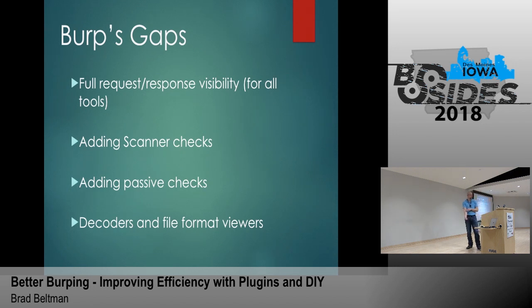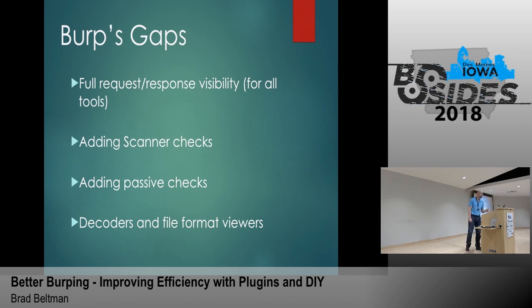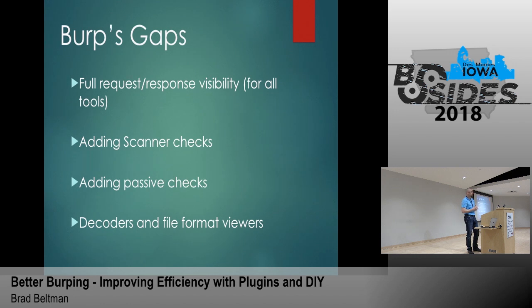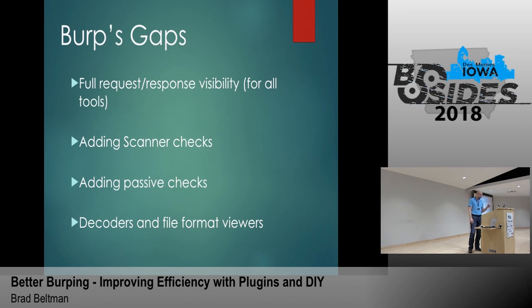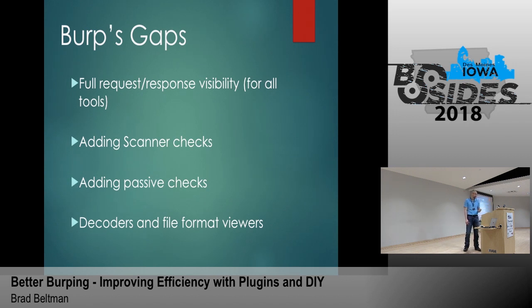One of the big gaps is having full visibility into all requests and responses across all the different tools — proxy history, intruder, repeater. Things like the scanner and spider are difficult to troubleshoot when you're not sure what's actually being sent to the application. Burp also doesn't give you an easy way outside of plugins to add scanner checks. We'll also look at decoders and file format viewers.